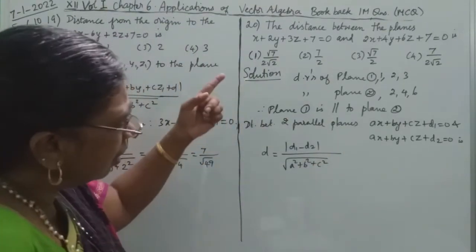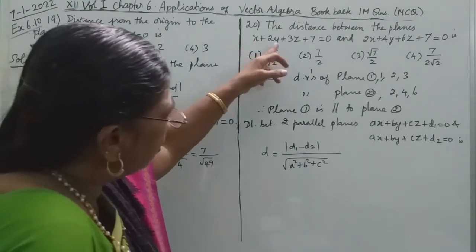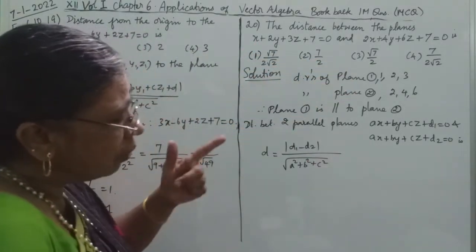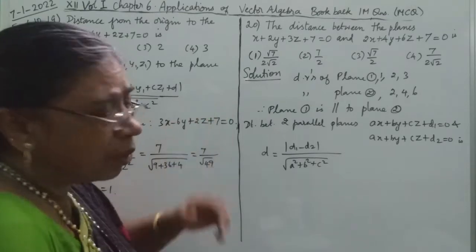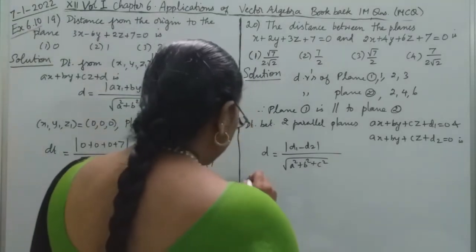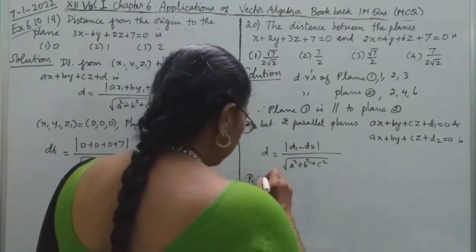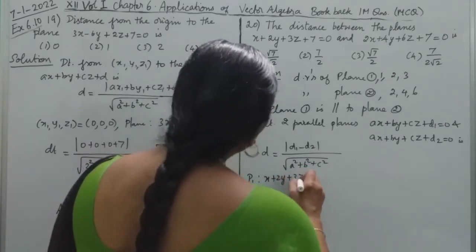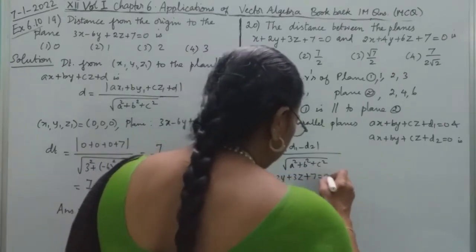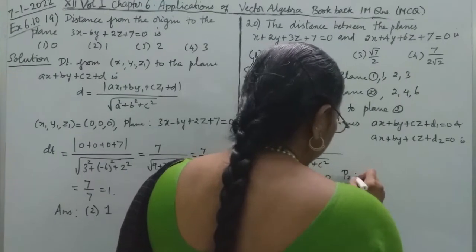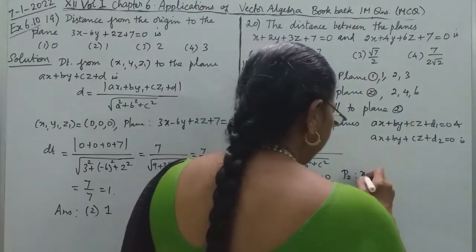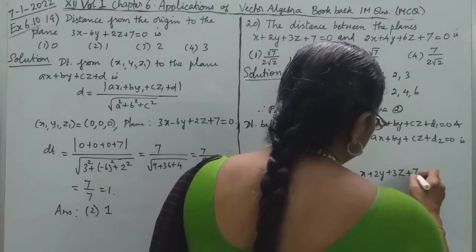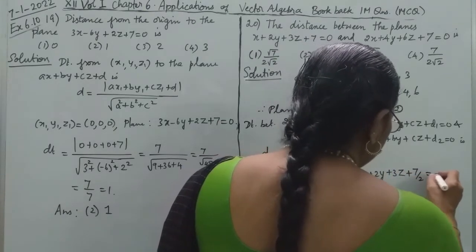If we look at the plane, the direction ratios are 1, 2, 3 and 2, 4, 6. So, in plane 2, we have to divide by 2. So now, plane 1 is x plus 2y plus 3z plus 7 equal to 0, and plane 2 divided by 2 gives x plus 2y plus 3z plus 7 by 2 equal to 0.